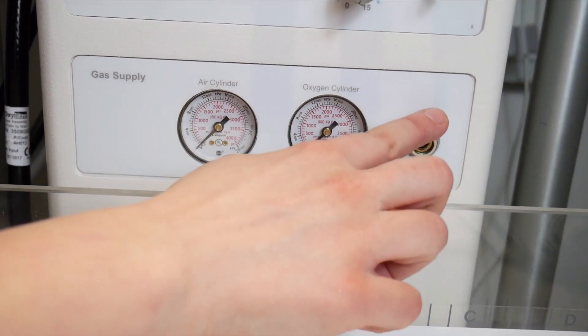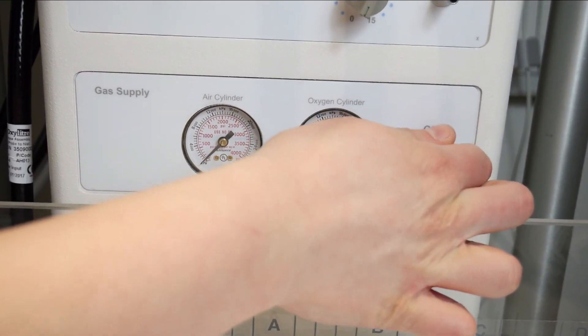These dials show how much air and oxygen are in the tanks behind the resuscitaire, and this switch should be used whenever the gases are in use.